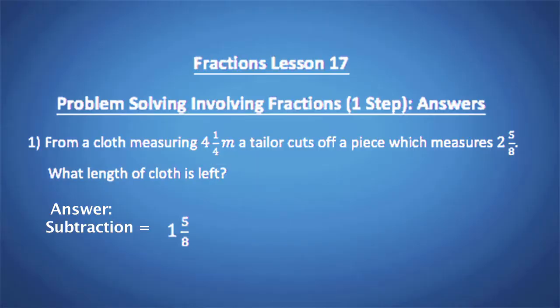Question 1. From a cloth measuring 4¼ meters, a tailor cut off a piece which measured 2⅝ meters. What length of cloth was left? The operation is subtraction and the length of cloth left is 1⅝.